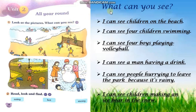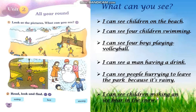Now, let's read again. What can you see? I can see children on the beach. I can see four children swimming. I can see four boys playing volleyball. I can see a man having a drink. I can see people hurrying to leave the park because it's raining. And I can see children making an ice bear in the snow.